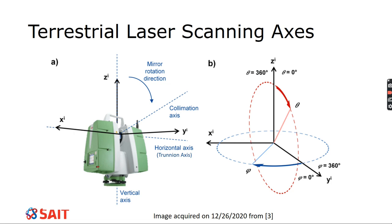The next axis is the collimation axis — this is where the scanner is pointing at any given time, so it changes constantly. We measure it with respect to z. Most of the bigger scanners have an option to do traversing, but what we call free station — just setting it up and scanning — is really what we do, because the targets and software do all the post-processing. You literally take a text file, upload it into the software, and it's registered. It really doesn't make sense to traverse unless there's a specific reason like limited targets.